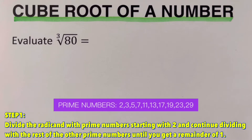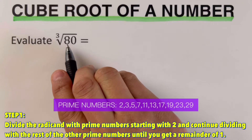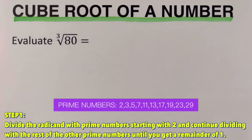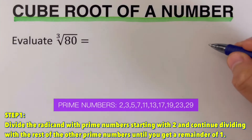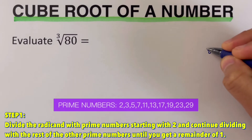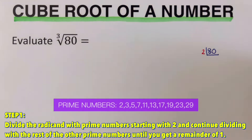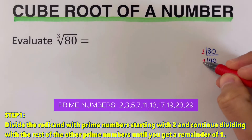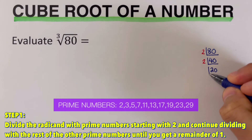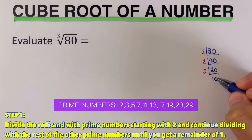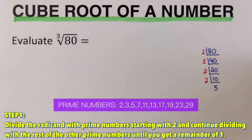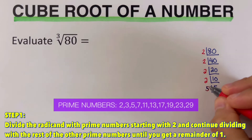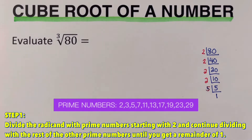I will put the list of the first 10 prime numbers on the side. In this problem, we are supposed to divide the radicand 80 with the first prime number, which is 2. So 80 divided by 2 is 40. Then 40 divided by 2 is 20. Then 20 divided by 2 is 10. And 10 divided by 2 is 5. Then I will divide that by the next prime number, which is 5. So 5 divided by 5 gives a remainder of 1. We already have a remainder of 1.